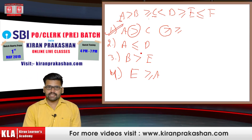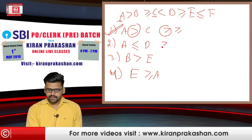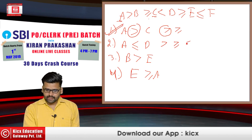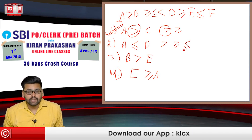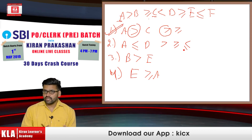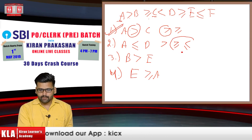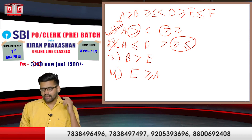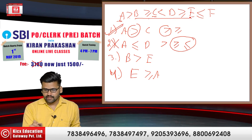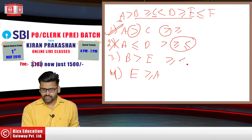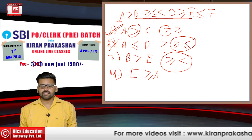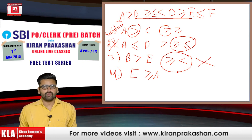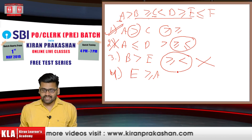Second conclusion: A ≤ D. Going from A, first sign is >, then ≥, then <. As I mentioned, first floor and third floor have no connection — when the two signs are opposite, cut that option immediately, it will never follow. For conclusion 3: B > E. Going from B to C, the signs clash. Whenever signs clash, that option will also not follow.